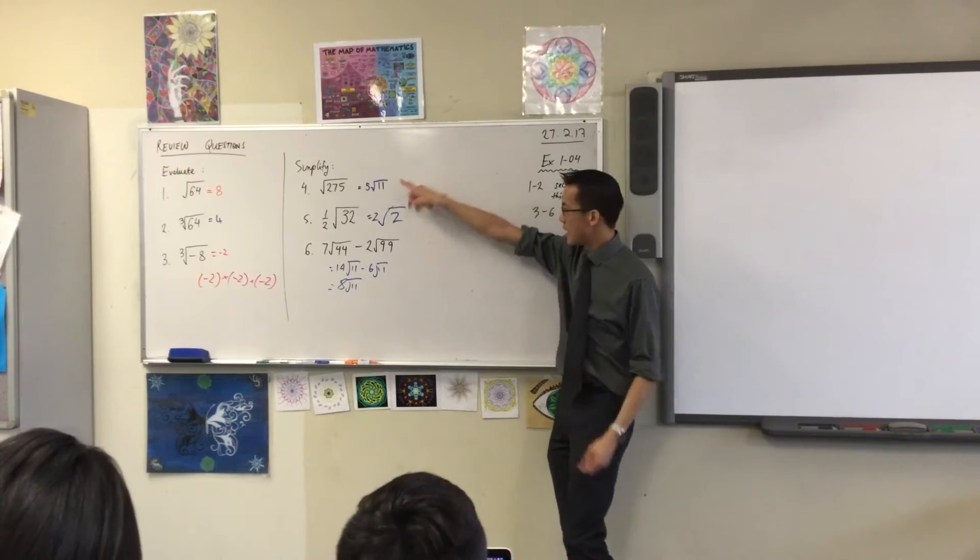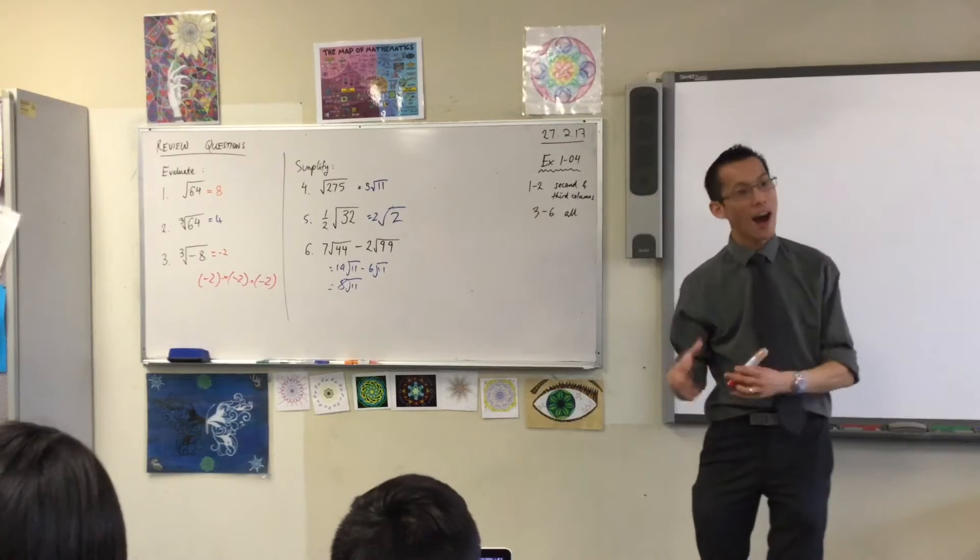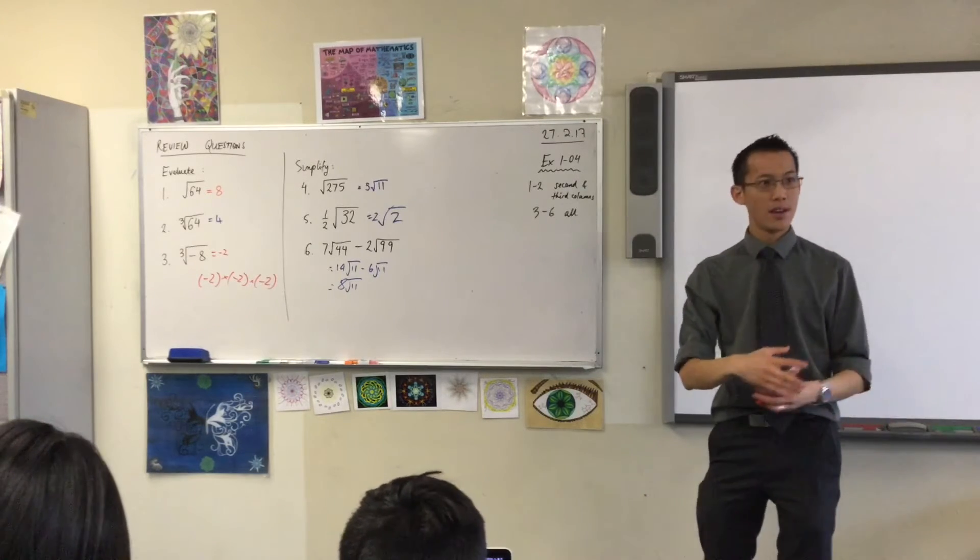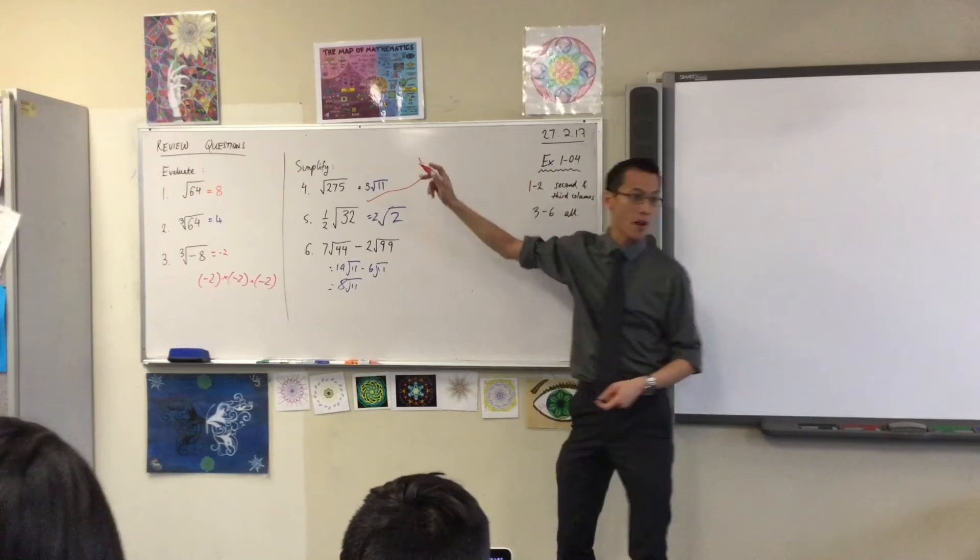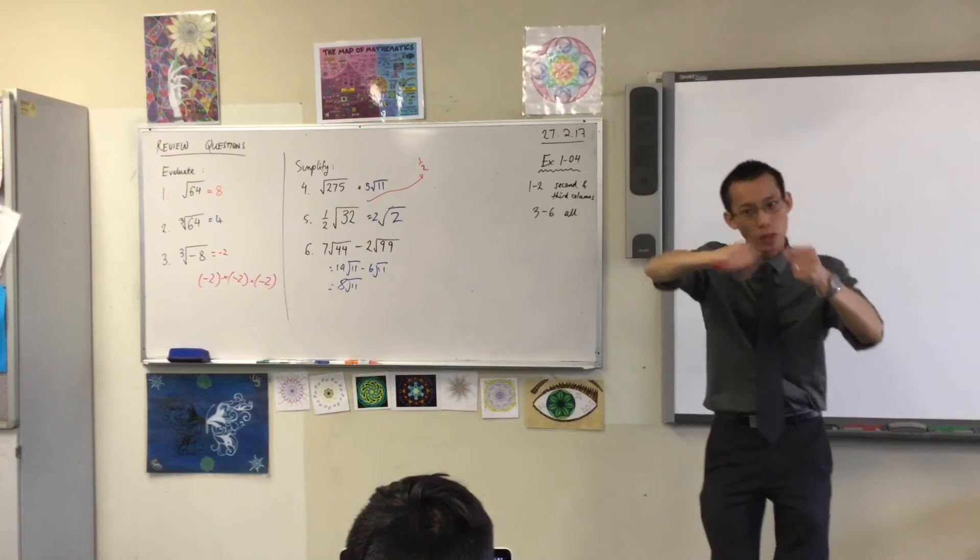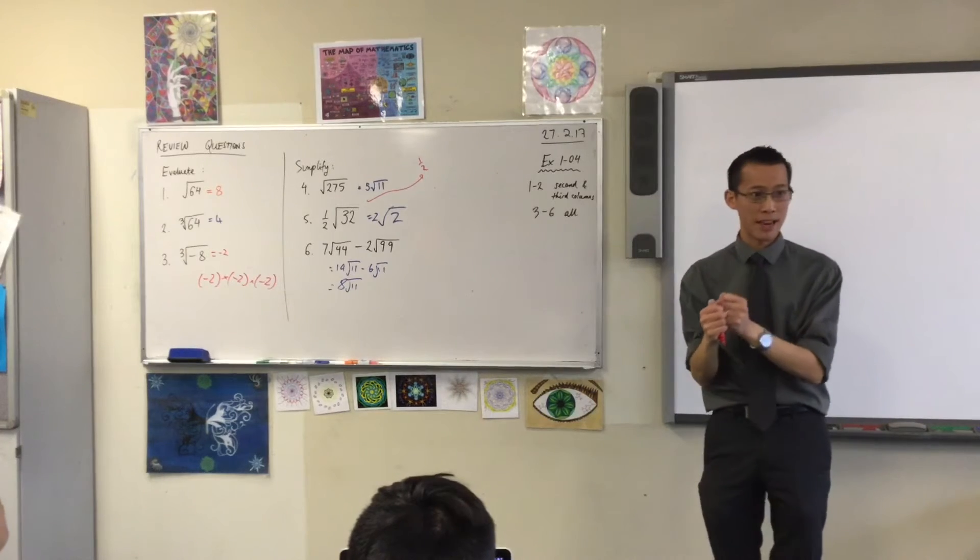5 root of 11 looks great to me. Now this one here, let's just put in an intermediate step. It's half times the square root of 32. So if I have that half hanging out the front there, what can I pull out of the square root of 32? That would be a nice quick way to simplify this. Any takers?